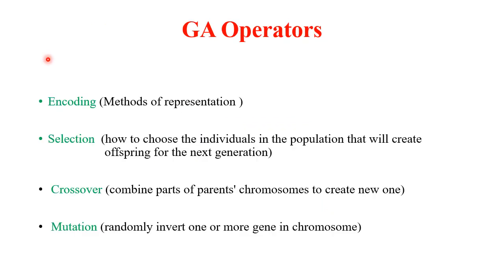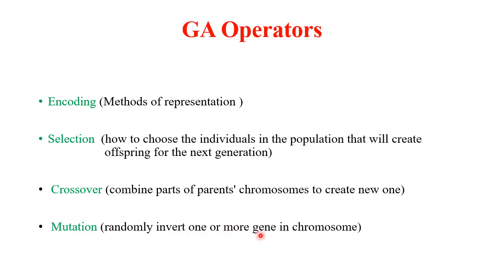The various operations in genetic algorithms are encoding, selection, crossover, and mutation. In crossover, we combine parts of both parents to produce new individuals. In mutation, we randomly invert one or more genes in a chromosome.